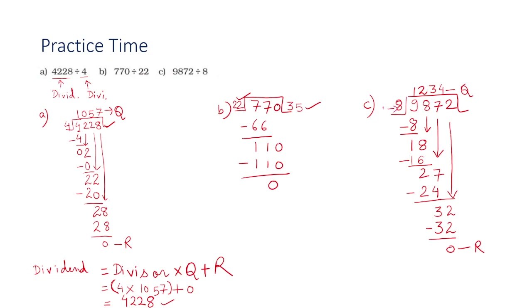When you multiply the quotient 1234 by the divisor 8, you will be getting 9872 as the answer — that is your dividend.